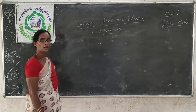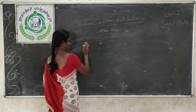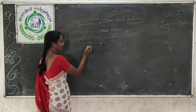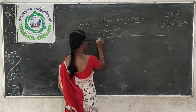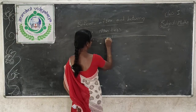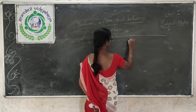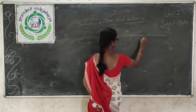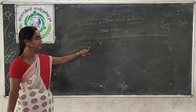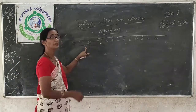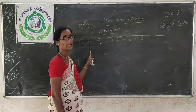Let's see how to find the before and after numbers. Here, number 9 is there. 0, 1, 2, 3, 4, 5, 6, 7, 8, 9, 10. What comes before 9? Before means the left side of the number.